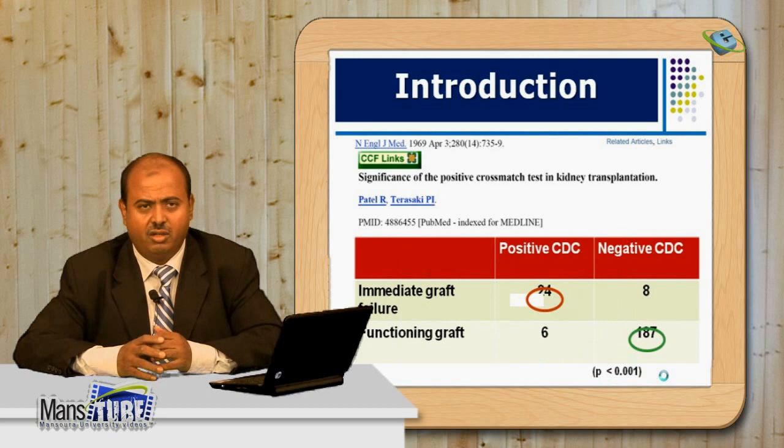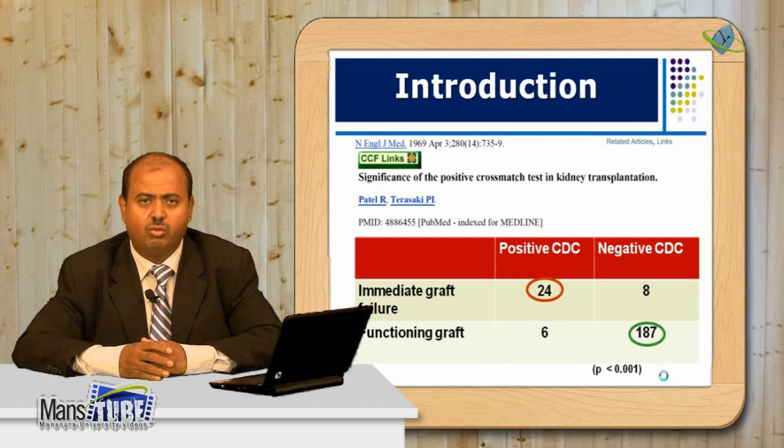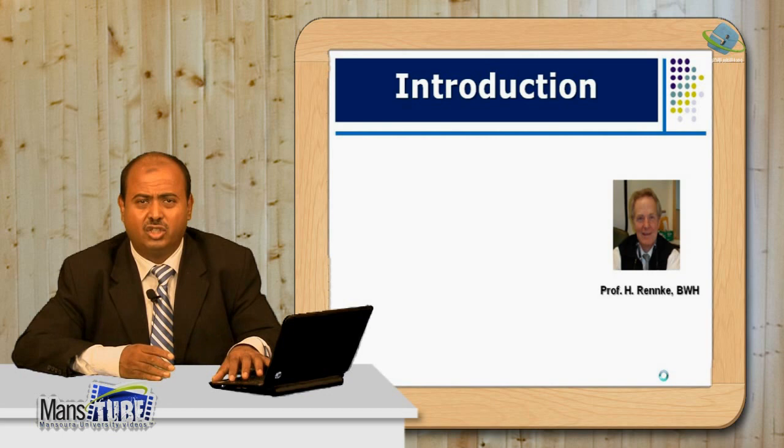Patel and Terasaki reported that if we transplant patients who are crossmatch-positive, the outcome of kidney transplantation is poor and inferior because of antibody-mediated rejection. A positive crossmatch means the patient's serum contains antibodies which, after transplantation, interact directly with the graft leading to a humoral process.